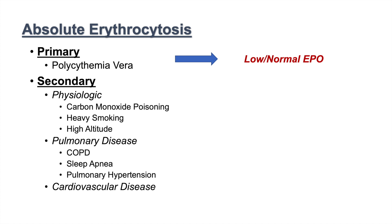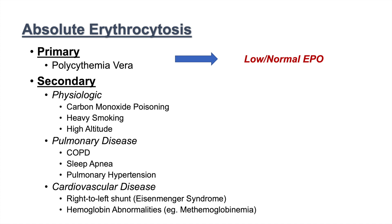Cardiovascular disease is another secondary category where the body tries to increase oxygen-carrying capacity by producing more red blood cells. Examples include right-to-left shunts, Eisenmenger syndrome, and hemoglobin abnormalities such as methemoglobinemia, all of which can lead to absolute erythrocytosis. These are all secondary to an underlying condition, unlike polycythemia vera, which is a primary disorder.